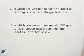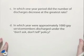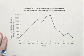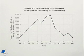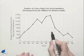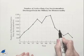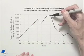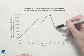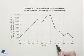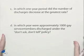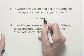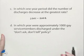In which one-year period did the number of discharges decrease at the greatest rate? We need to look back at the chart for the greatest decrease in one period of time. Notice that between the little blocks we have one-year periods. We can see that the greatest decline occurred where we have the steepest slope decreasing, from the year 2001 to 2002. So 2001 to 2002 showed the greatest rate of decrease.